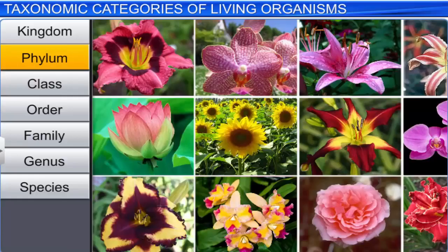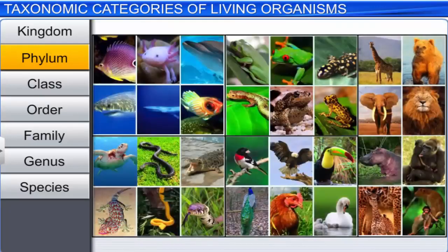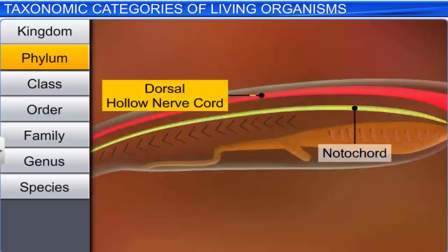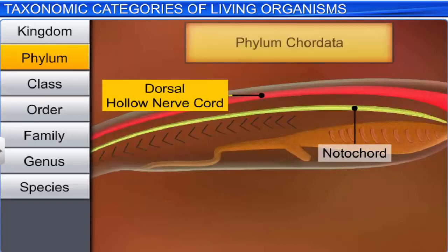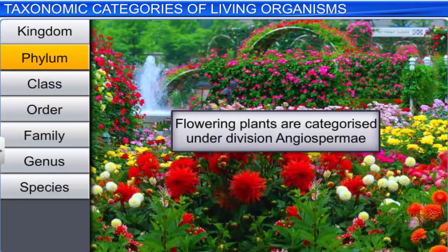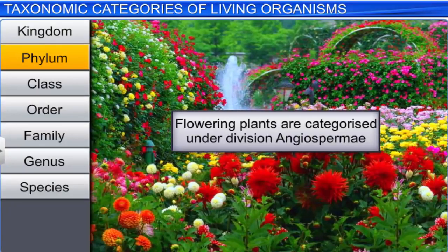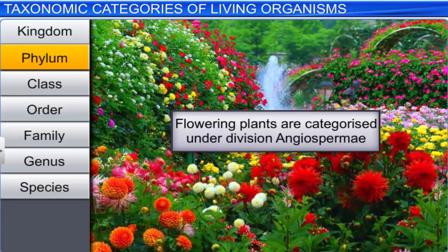Phylum or division is the next category. Animals like fishes, amphibians, reptiles, birds, and mammals have common features like the presence of notochord and a dorsal hollow neural system, and are thus categorized as Phylum Chordata. Similarly, all flowering plants are categorized under the division Angiospermae, or Magnoliophyta.